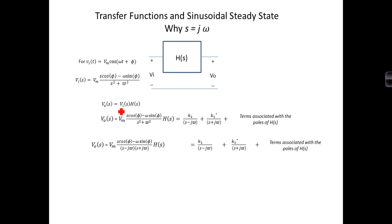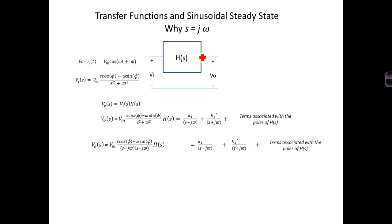V out will be equal to the Laplace transform of the input times the transfer function H of S. We're going to make an assumption regarding H of S: although it's unspecified, we're going to assume that it's stable, which means that the poles of H of S are all in the left half plane of the complex S plane.